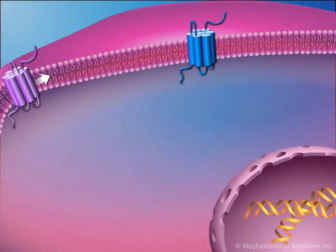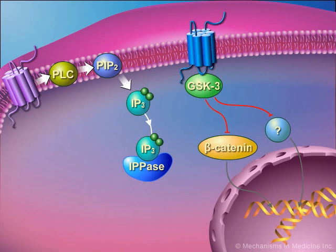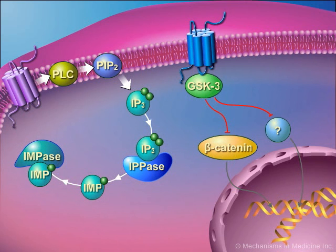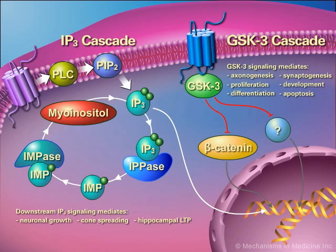At the molecular level, aberrant signaling cascades alter synaptic plasticity. Strong evidence supporting the importance of second-messenger signaling has come from studying the targets of mood-stabilizing drugs such as lithium. GSK3 and IP3 signaling cascades are known to mediate axonogenesis, synaptogenesis, neuronal growth, and cone spreading. Other downstream effects may also be involved.